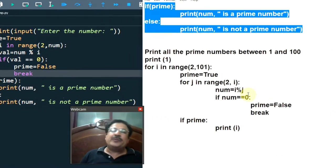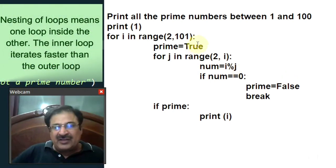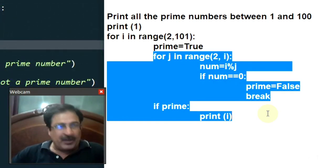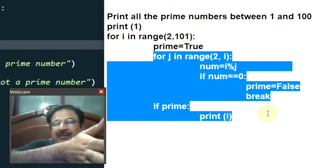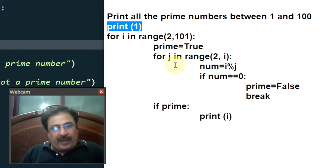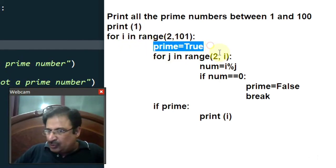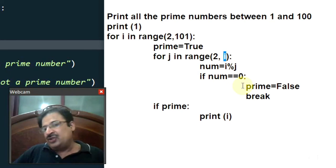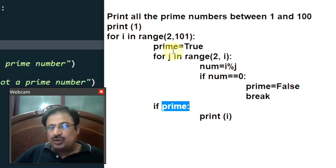Now this next program explains nesting of loops — one loop inside another. The outer for loop is here and inside it there is another for loop. In this program I want to display prime numbers between 1 and 100. Since 1 is already printed, we compare from 2 till 100. The value of i is 2 in the first round. Prime is initialized to True. The inner for j loop goes from 2 to i — since i is 2, this inner loop does not run at all. Control comes to the if statement: prime is True, so it prints i — 2 is displayed.